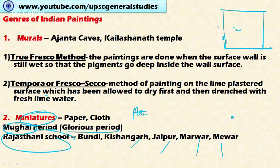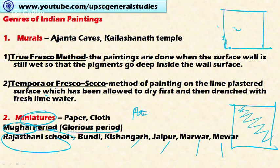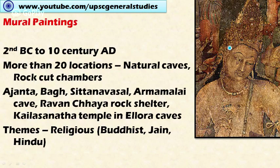The second method is the tempera or fresco secco method. Under this, lime is plastered on the surface where the painting is to be done, allowed to dry first, and then the wall is drenched again with fresh lime, on which the paintings are then done. These are the two important methods used in mural painting.